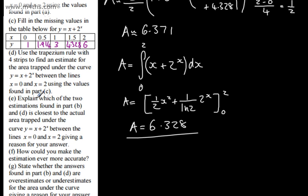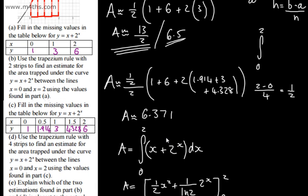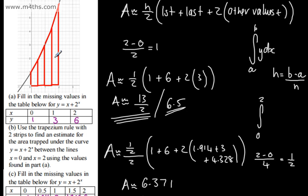In part E, we explain which estimation from parts B and D is closest to the actual area. The four-strip estimate is closer because increasing the number of strips makes the trapeziums fit the curvature of the curve better. As h gets smaller and smaller, we can match the curve more closely.